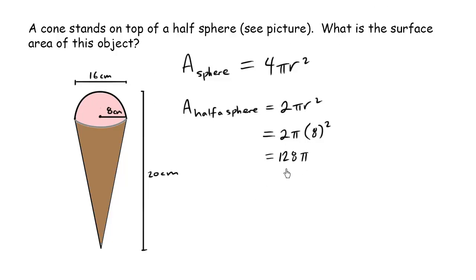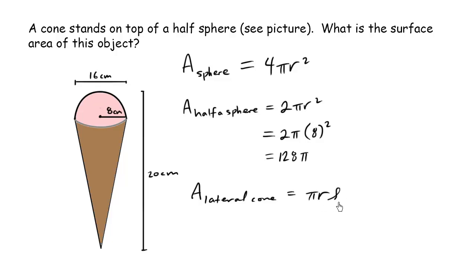Now recall the formula for the lateral area of a cone. The lateral area of a cone equals πrs — I'm going to write s in a distinct way so we don't confuse it with the number 5. Unfortunately, we don't have this slant value s, so what we're going to use is the good old Pythagorean theorem.